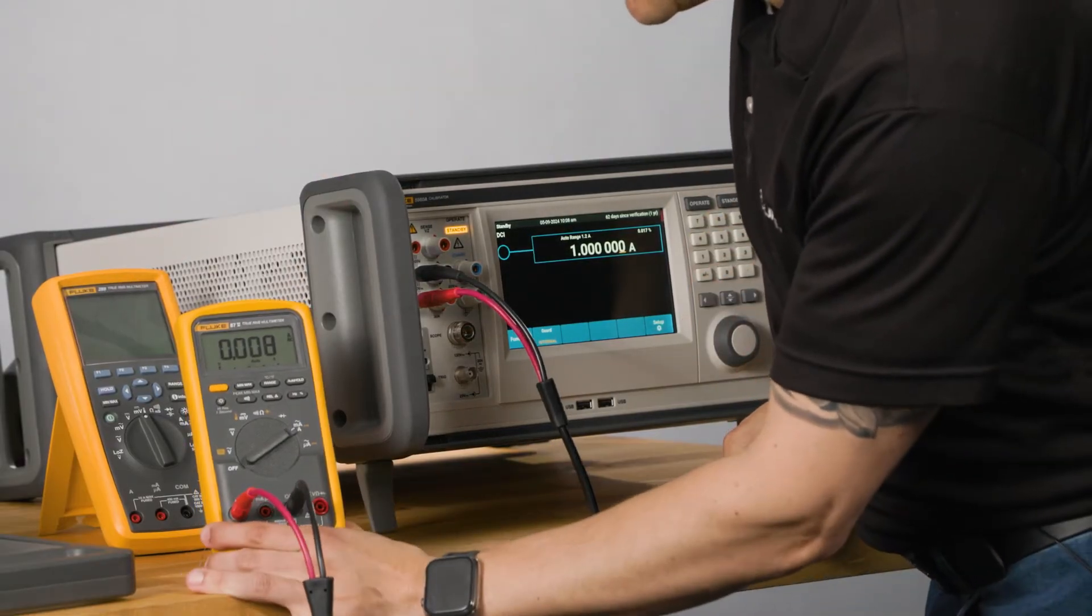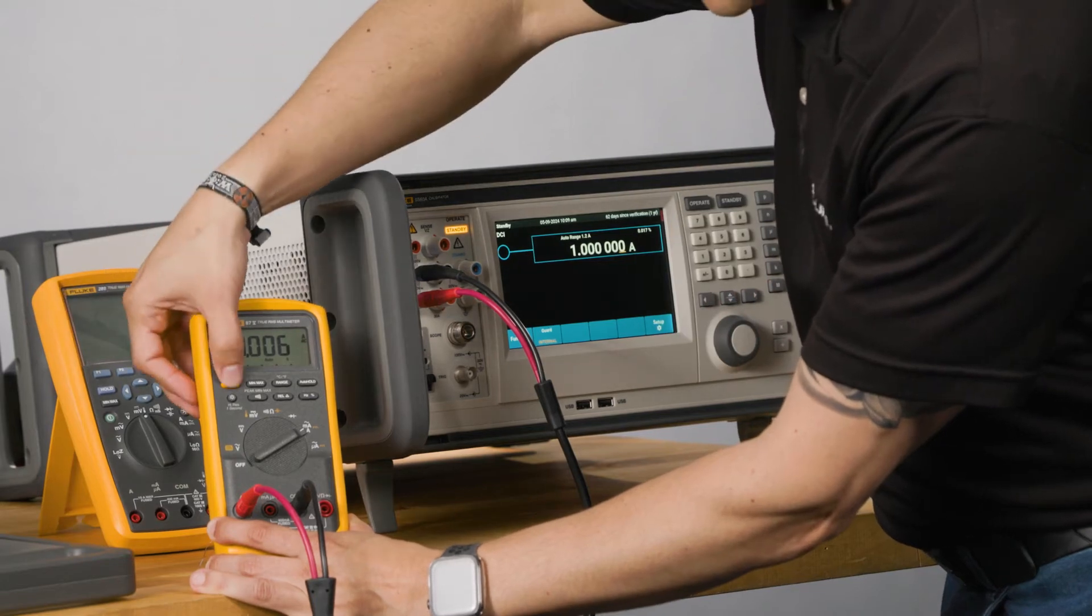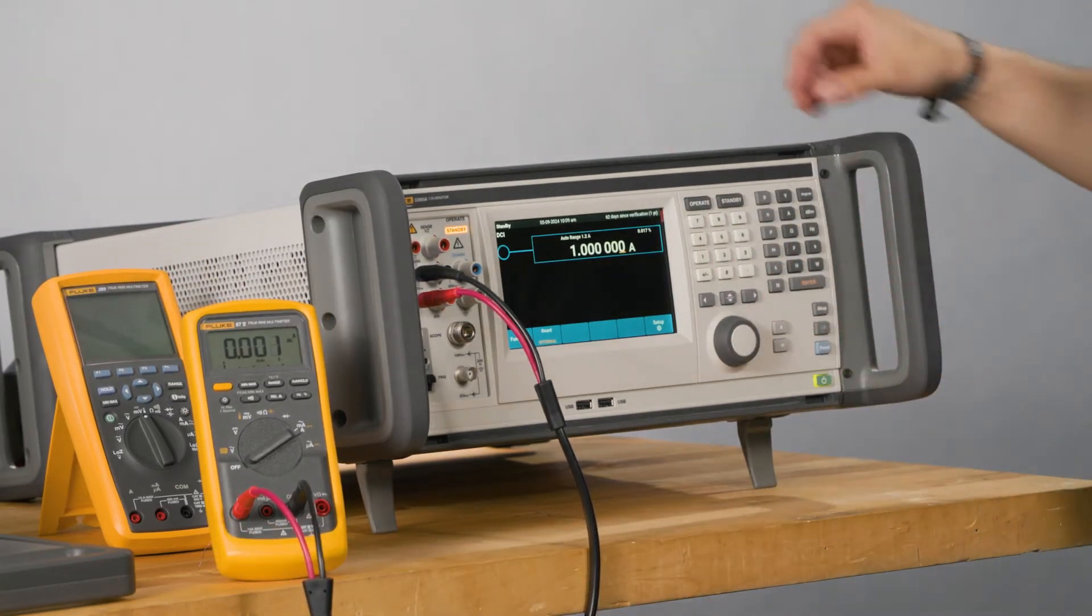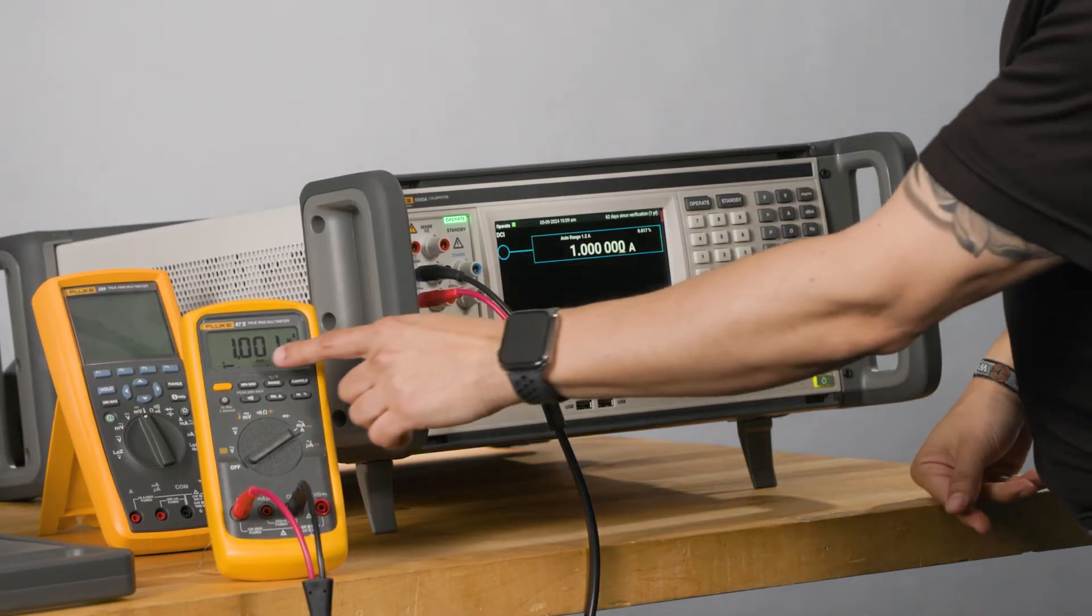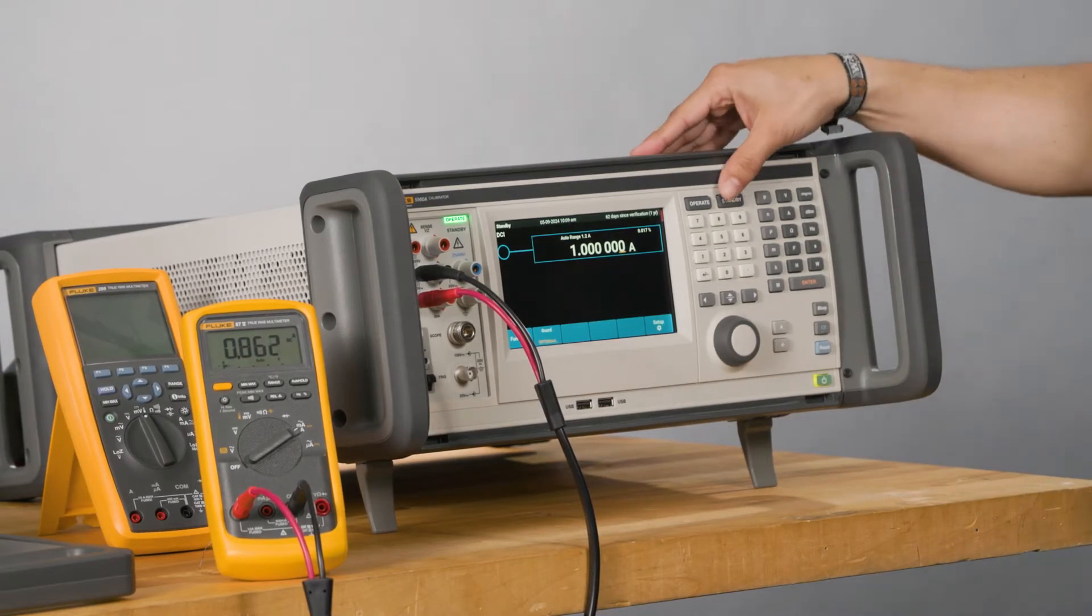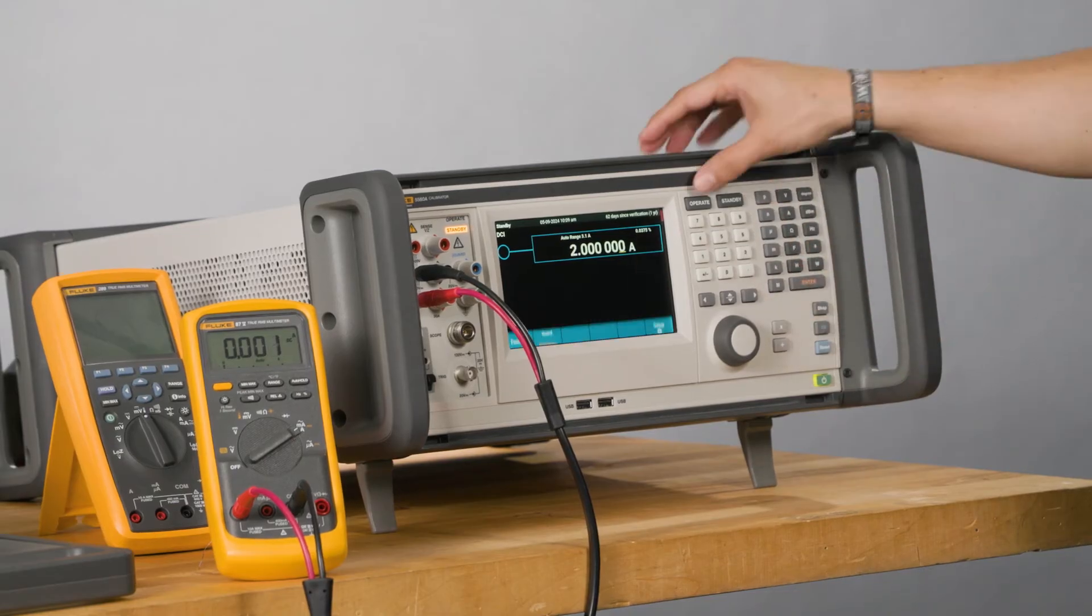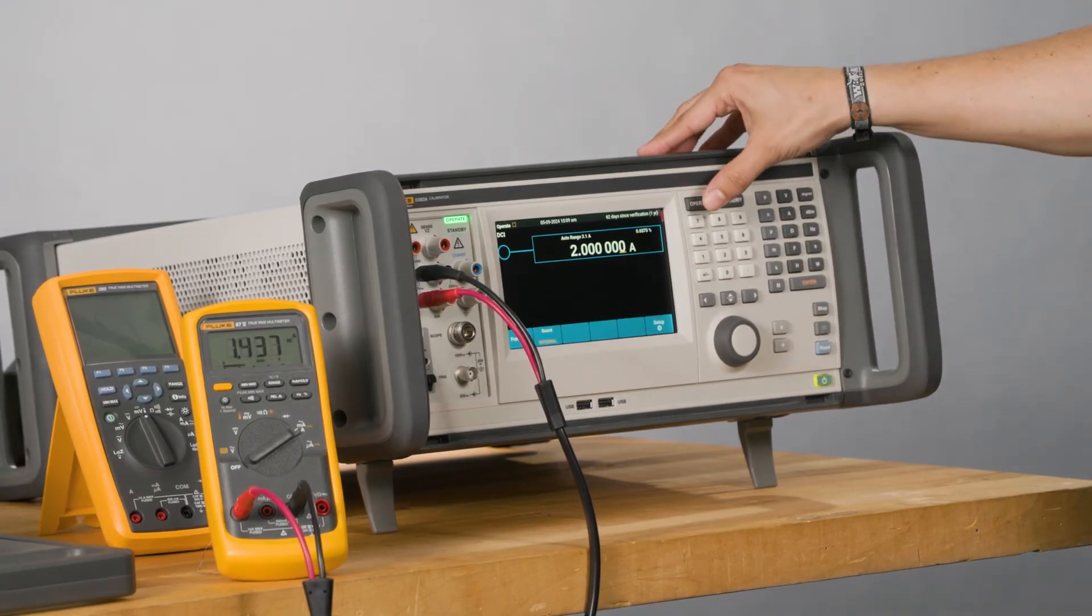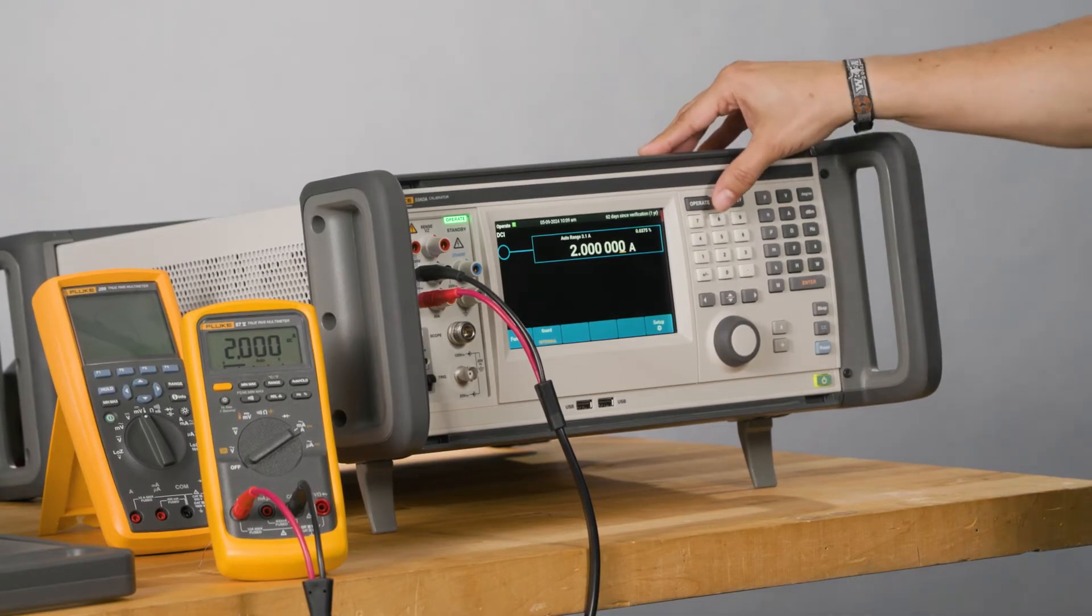So I'm going to do DC current. We're good. So now I'm sending one amp. Reading one amp. And the same. Two amps. Two. Spot on.